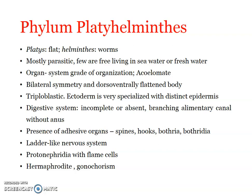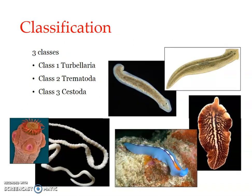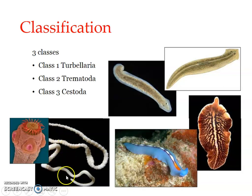Phylum Platyhelminthes is divided into three main classes: Class I Turbellaria, Class Trematoda, and Class Cestoda. The examples shown include Dugesia for Turbellaria, the liver fluke Fasciola for Trematoda, and the tapeworm for Cestoda. These are representatives of phylum Platyhelminthes. We will be looking into the features of each class as well as one example under each class in the coming videos. Thank you.